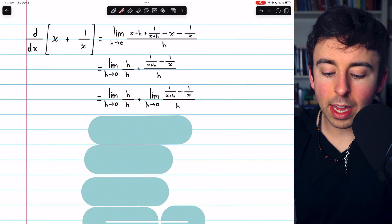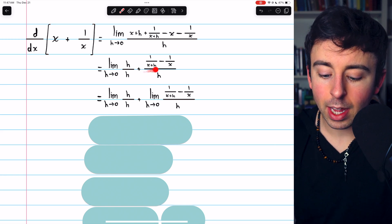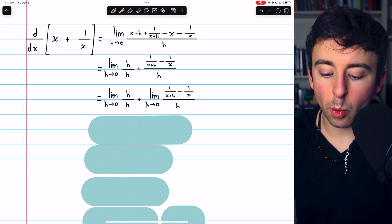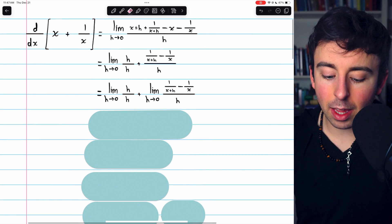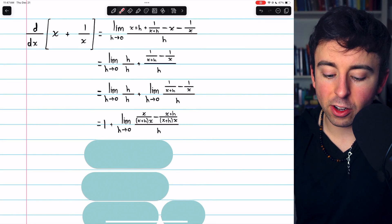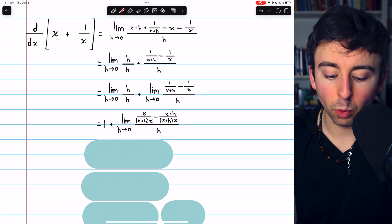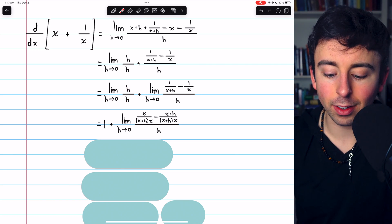By the limit sum law, we can rewrite this limit of a sum as a sum of limits. So we have the limit of h over h plus the limit of this big fraction. Now the limit of h over h as h approaches 0 is just 1, because h over h is just 1.